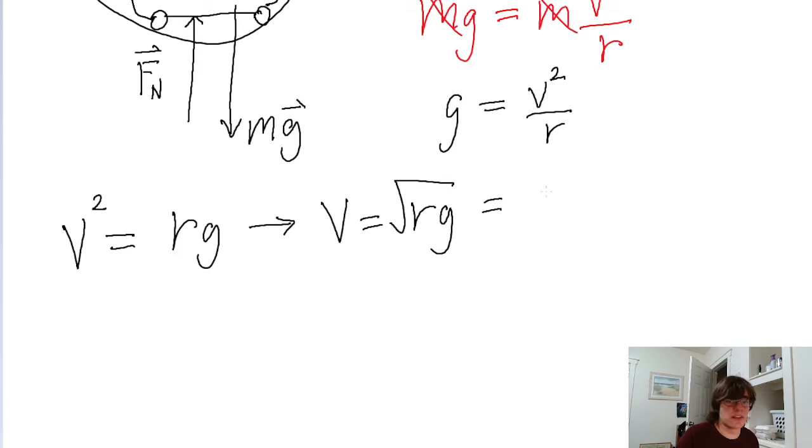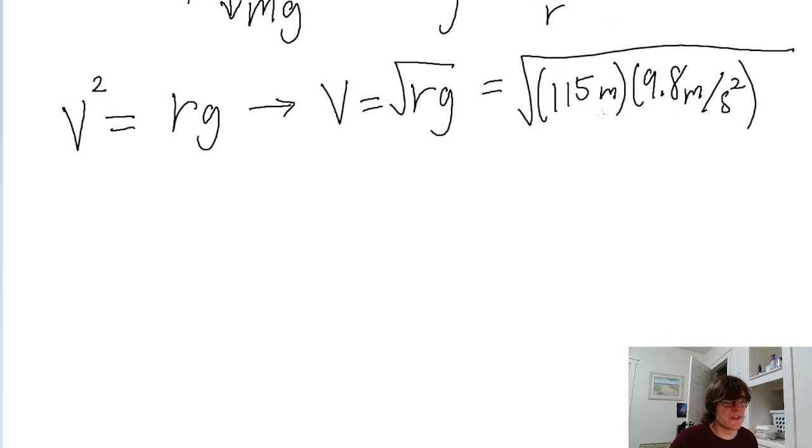So now let's plug in the values we were given. So R has a value of 115 meters. And G has a value of 9.8 meters per second squared. And this is all underneath the square root. And if we put this into a calculator, then we find a speed of about 34 meters per second.